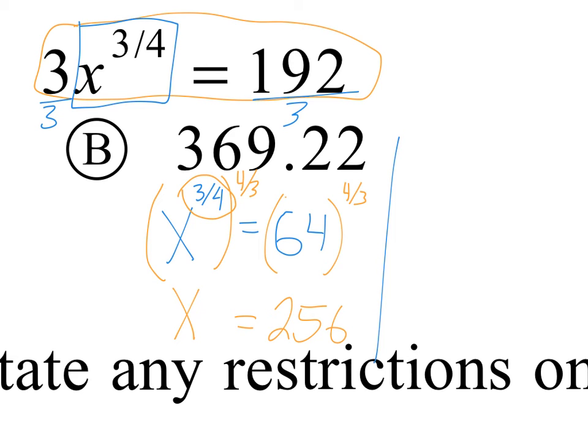Looking at this another way, if I've got x to the 3/4 is equal to 64, if I were to rewrite this x as a radical, we've got the 4th root of x to the 3rd is 64. To get rid of this 4th root, we can raise both sides to the 4th power.